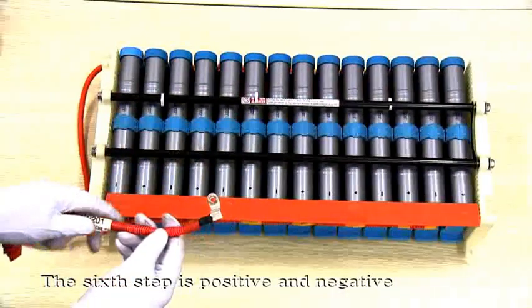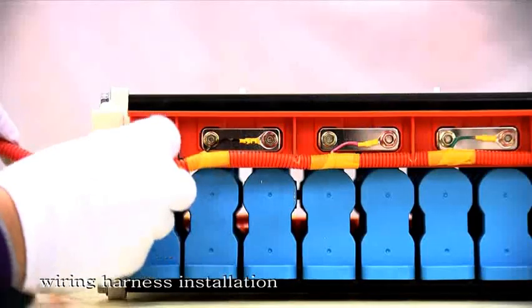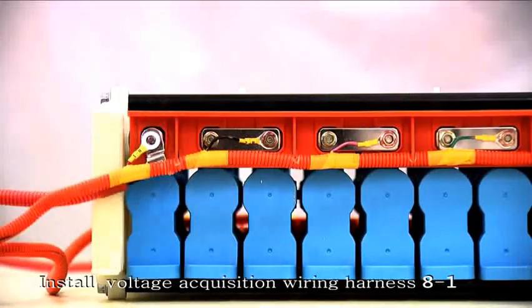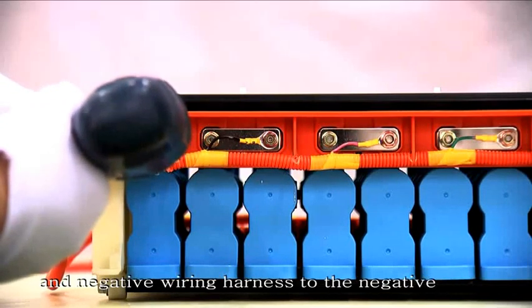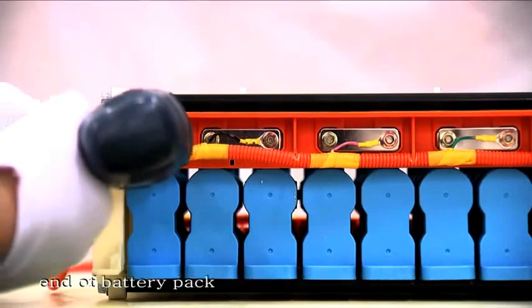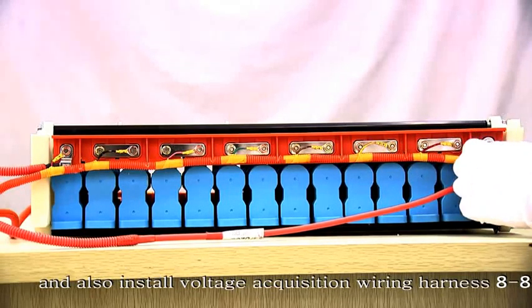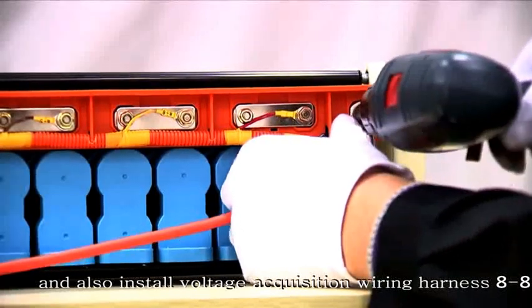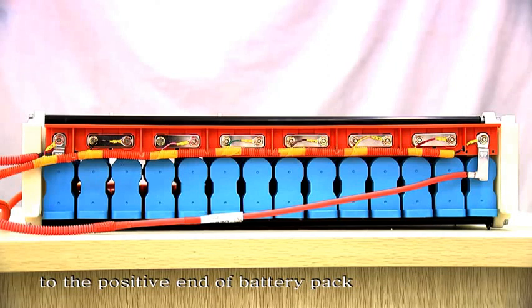The sixth step is positive and negative wiring harness installation. Install voltage acquisition wiring harness 8-1 and negative harness to the negative end of battery pack. And also, install voltage acquisition wiring harness 8-8 and positive harness to the positive end of battery pack.